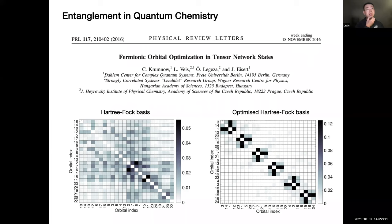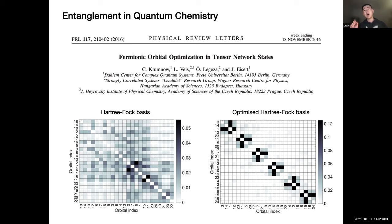You choose the most correlated orbitals to capture the correlation effects in your ground state. The second example is orbital optimization in quantum chemistry: when you apply tensor network methods you have the freedom to choose which molecular orbitals you map onto your tensor network. Running DMRG on optimized Hartree-Fock orbitals leads to faster convergence and lower bond dimension, hence lower computational cost.